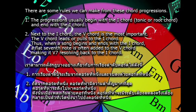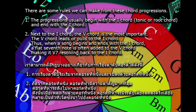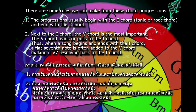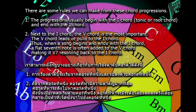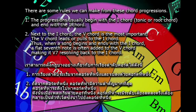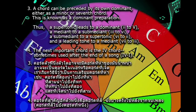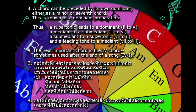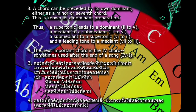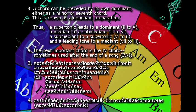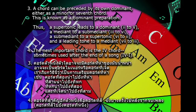Thus, when a song begins and ends with the first chord, a flat seventh note is often added to the fifth chord, making it a seventh chord resolving back to the first chord. Rule 3: a chord can be preceded by its own dominant, either as a minor or seventh chord — this is known as dominant preparation.